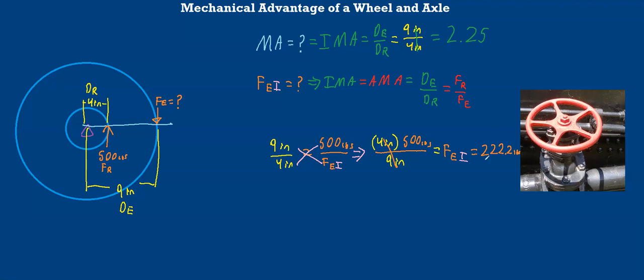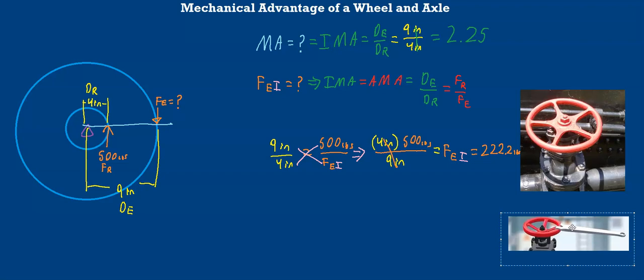Which is considerably less than 500 pounds. But what if we're still not strong enough to turn 222 pounds? Well, there's actually a way we can cheat here. My grandpa, when I was a kid, introduced me to what's called a cheater pipe. And what a cheater pipe is, is basically you add on to the end of whatever you're trying to rotate an extra length of leverage.